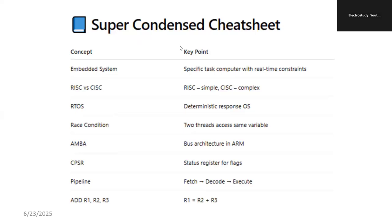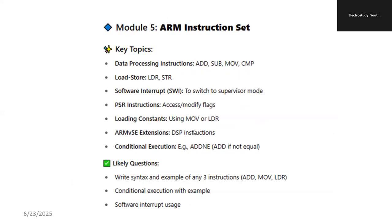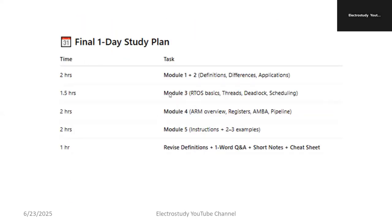So ultimately, you can prepare these shortcuts: Embedded System is a specific-task computer with real-time constraints; RISC is simple, CISC is complex; RTOS means deterministic response operating system; race condition means two threads access the same variable; AMBA is the bus architecture in ARM processors; CPSR is the status register for flags; pipeline follows fetch, decode, and execute stages. ADD R1, R2, R3 means R2 and R3 are added and stored into R1. ADD, SUB, MOV are all under data processing instructions.